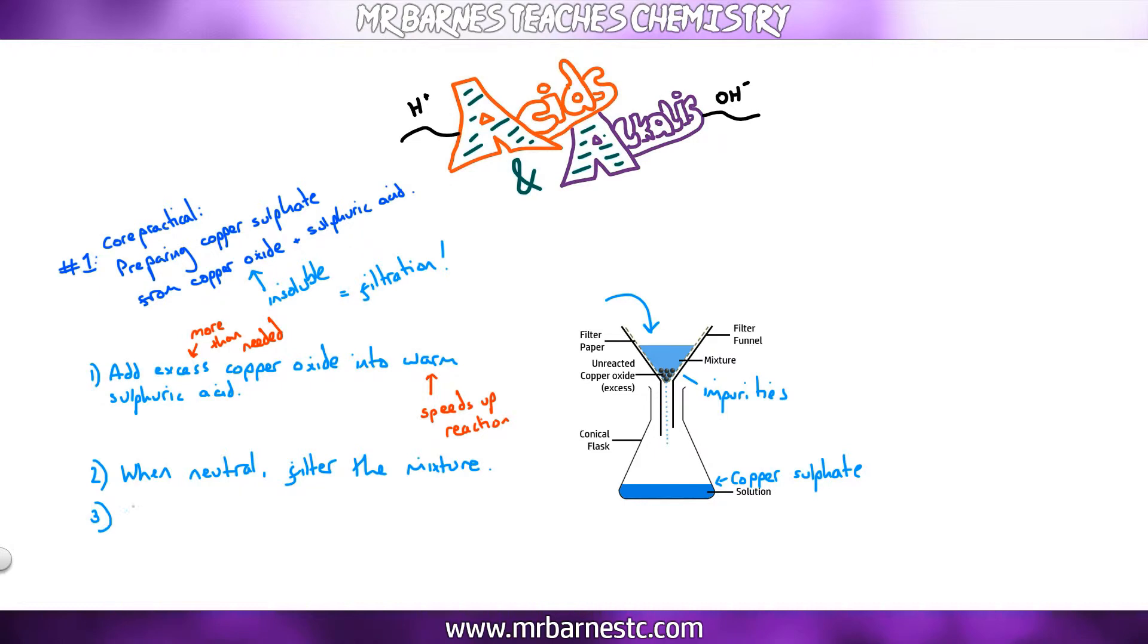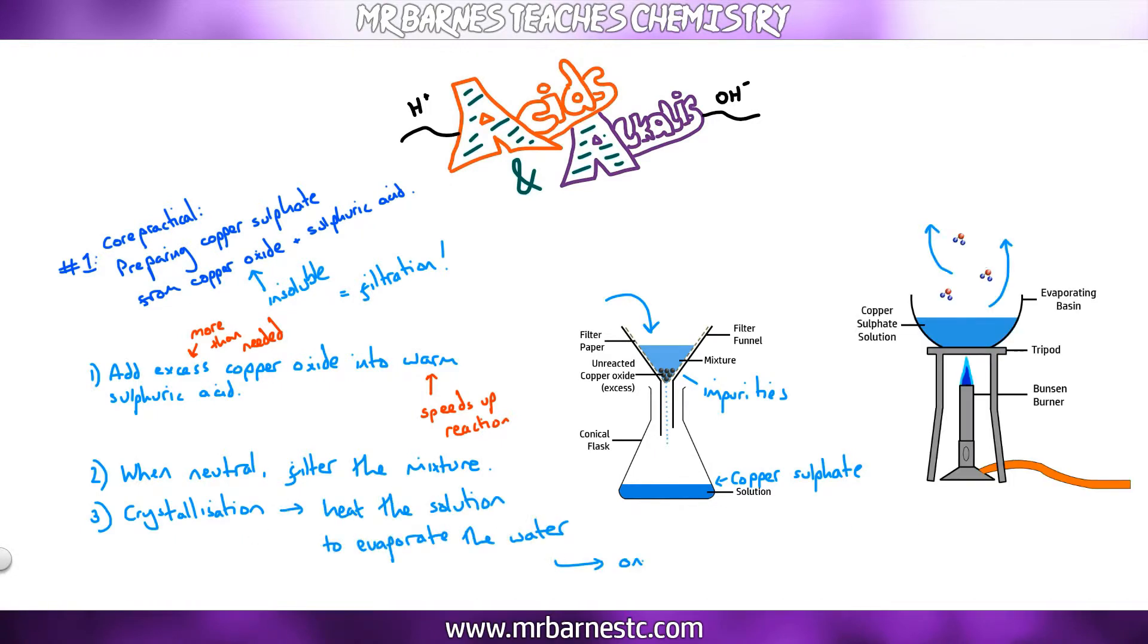The third step is crystallisation. You should remember this from the states of matter topic—that is simply evaporating off the water. So you heat the solution up and it evaporates off the water, and that will leave your crystals behind. Now just a few things to note here. How do you know it's neutral? You can either use pH paper or a pH probe. That'll tell you when your solution is neutral. Secondly, when we say heat the solution to evaporate the water, it's usually a good idea to only get rid of about half of it and then leave it on the side to get rid of the rest of the water. If you leave it to cool, the rest of the water will evaporate off and you'll get larger crystals.